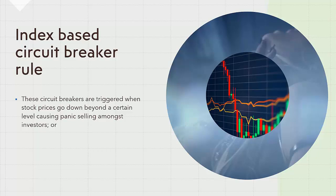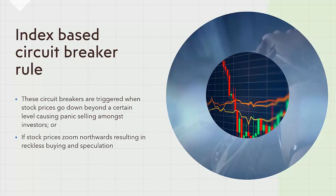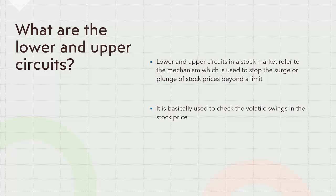These circuit breakers are triggered when stock prices go down below a certain trigger point, preventing panic selling, or when the stock prices zoom northwards resulting in reckless buying and speculating, causing traders to overexpose themselves beyond their financial means as the greed to make a fast buck takes over rational thinking. Circuit breakers are designed to operate both ways — upward as well as downward. A downward circuit breaker is designed to safeguard bullish traders or investors who have a long position and will suffer huge losses if the markets come crashing down.